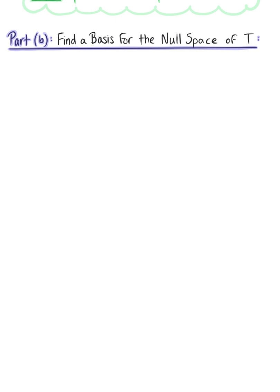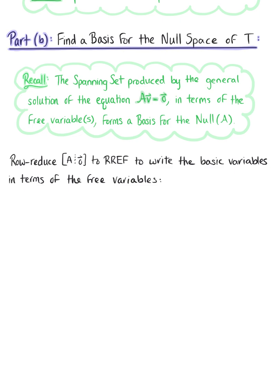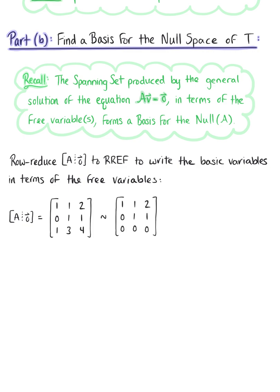In part B, we are being asked to find a basis for the null space of our linear transformation. Recall that the spanning set produced by the general solution of the homogeneous equation, written in terms of the free variables, forms a basis for the null space of matrix A. To find this basis, we are going to row reduce matrix A augmented with the zero vector to row reduced echelon form. And we're already halfway there — in part A we already row reduced to echelon form, so this is where we begin.